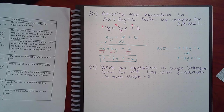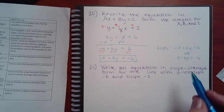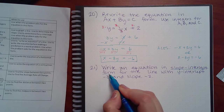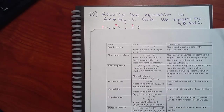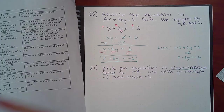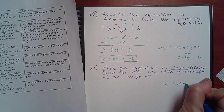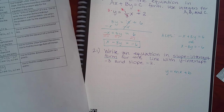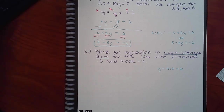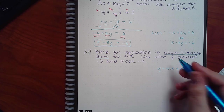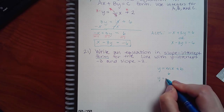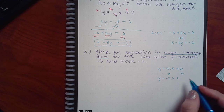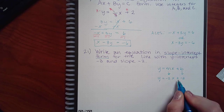The next problem says: write an equation in slope-intercept form for the line with y-intercept of negative three and slope of negative two. The slope-intercept form is y equals mx plus b. I have the slope m equals negative two and b equals negative three. A positive times a negative is a negative, so the double sign becomes just minus: y equals negative two x minus three.